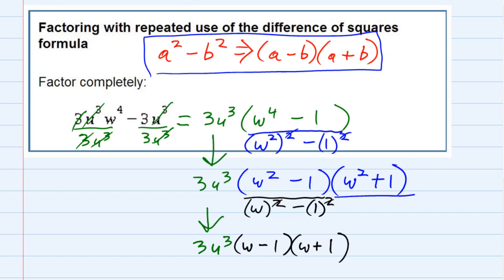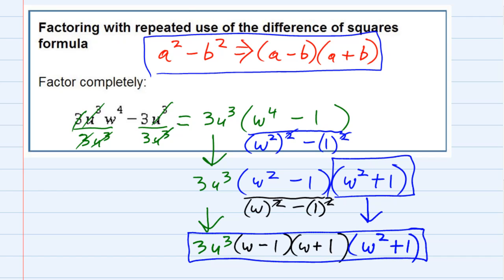And of course, this guy out here just needs to come down, I don't want to lose that factor, w² plus 1. The reason we can't do the formula on it is because it's the sum of two squares, and not the difference. So, we have factored it at this point.